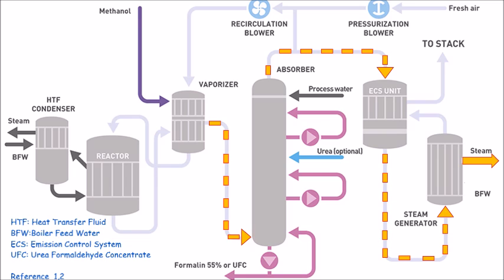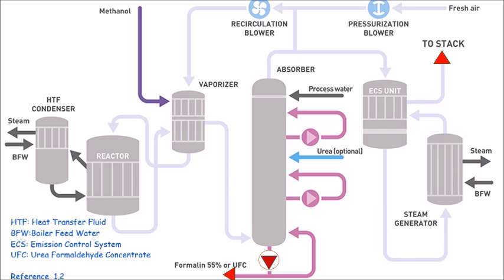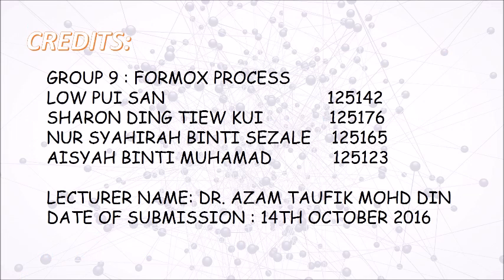In the ECS unit, the product stream from the absorber is cooled down while the recycle stream is heated. The product formaldehyde is then formed from the lower section of the absorber.